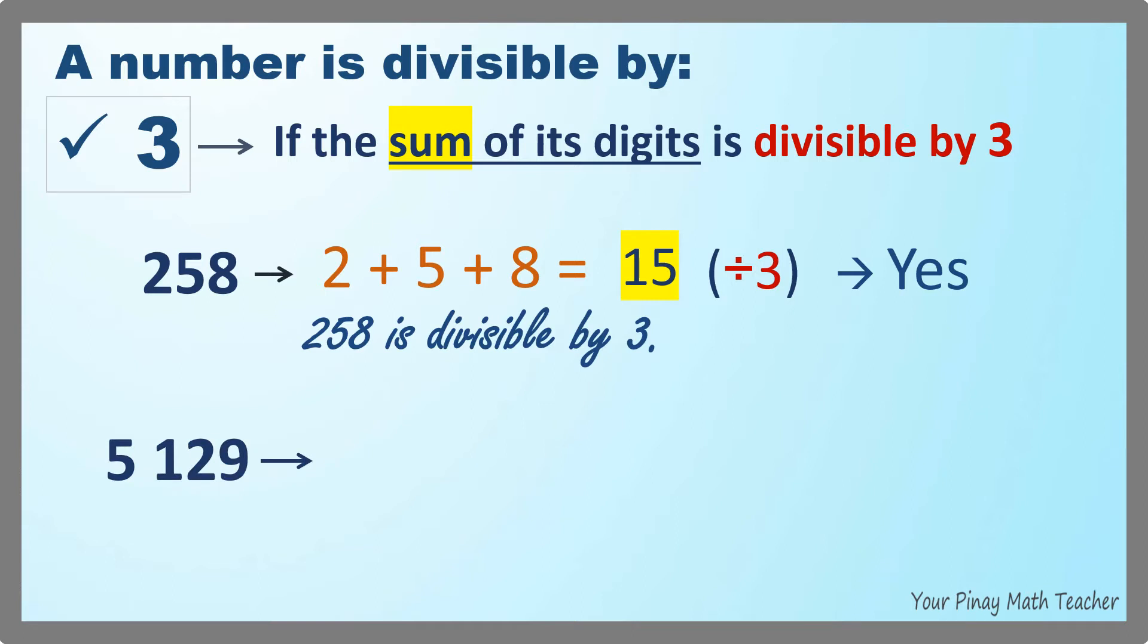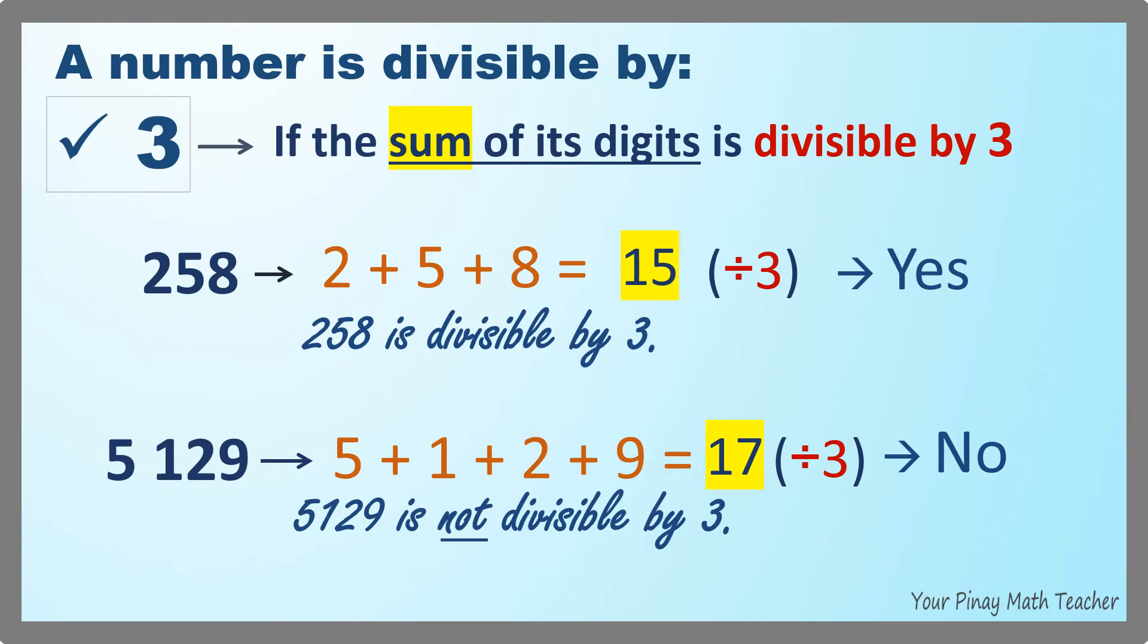How about 5,129? What is the sum of its digits? It's 5, 1, 2, and 9. It's 17. Can you divide 17 by 3 exactly? No. So 5,129 is not divisible by 3.